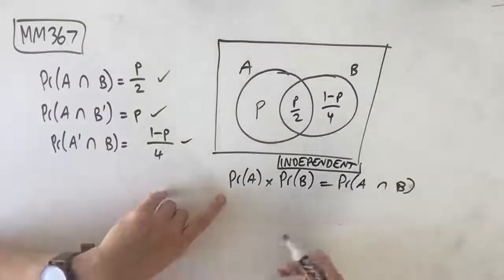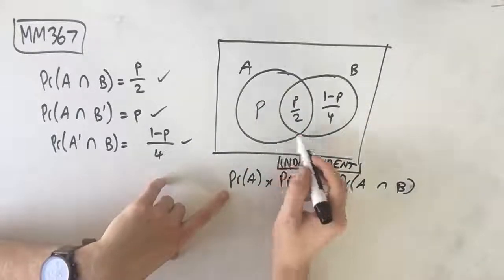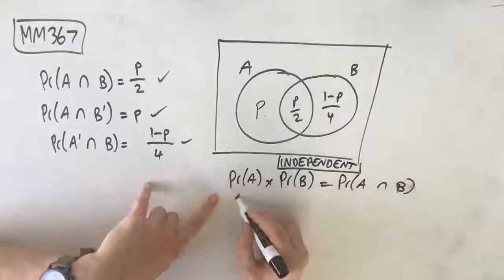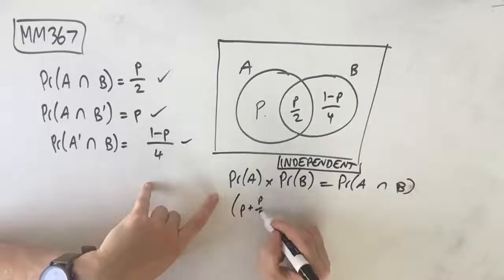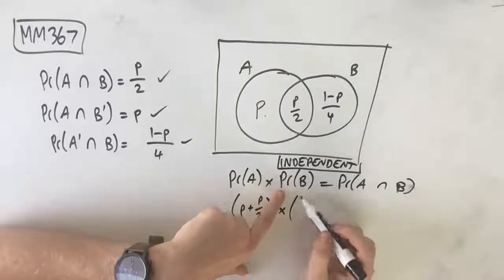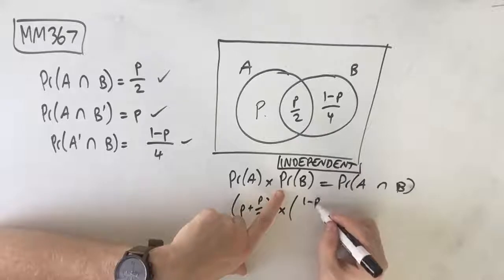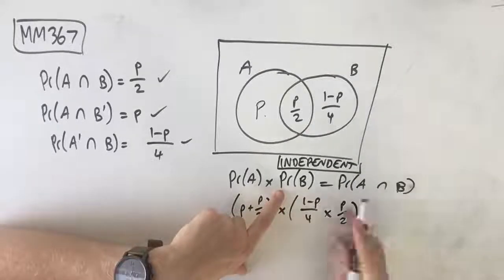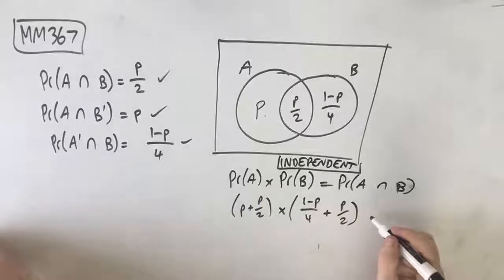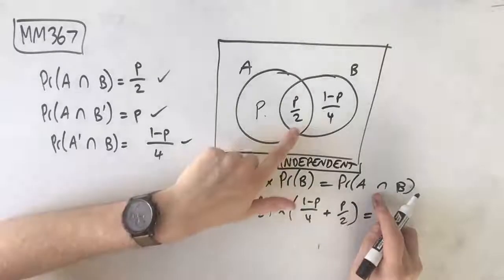Now we can plug in our values. The probability of A is this whole circle, so P plus P over 2. Multiplied by the probability of B, which is all of this circle here, so 1 minus P over 4 plus P over 2. And that's equal to the probability of A intersect B, which is P over 2.